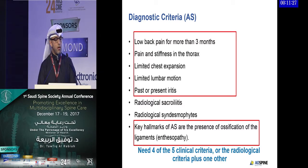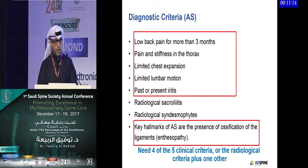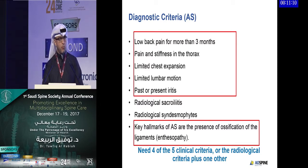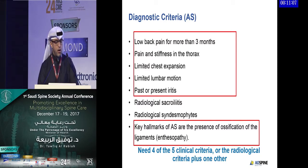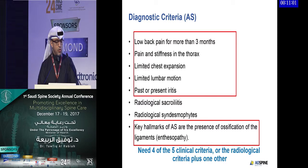The diagnosis of ankylosing spondylitis requires low back pain for more than three months, pain and stiffness in the thorax, limited chest expansion, limited lumbar motion, past or present iritis, radiological sacroiliitis, and radiological syndesmophytes. The key landmark of ankylosing spondylitis is the presence of ossification of the ligaments. Four of the five clinical criteria plus one radiological criterion are required.